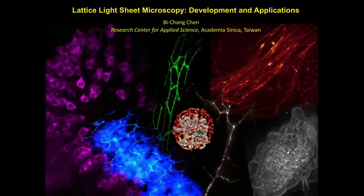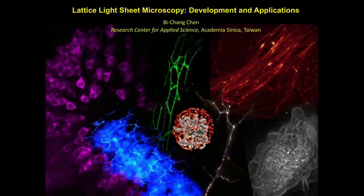We'll answer as many questions as we have time for at the end. You can enlarge the slide window by clicking the screen icon at the lower right. If you have trouble seeing or hearing the presentation, click the support button at the top right. I'd like to introduce Dr. Bijan Chen. He received his BS and MS degrees from the Chemistry Department of National Taiwan University in 2001 and 2003. In spring 2014, he became an assistant research fellow at the Research Center for Applied Science, Academia Sinica in Taiwan, developing fast, low-phototoxicity, multicolor 3D fluorescent imaging tools.